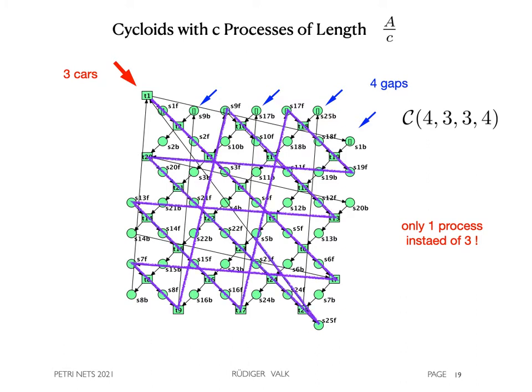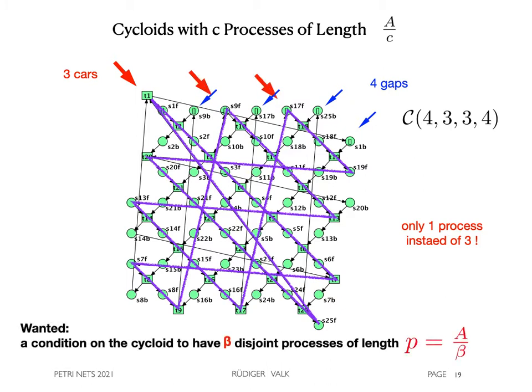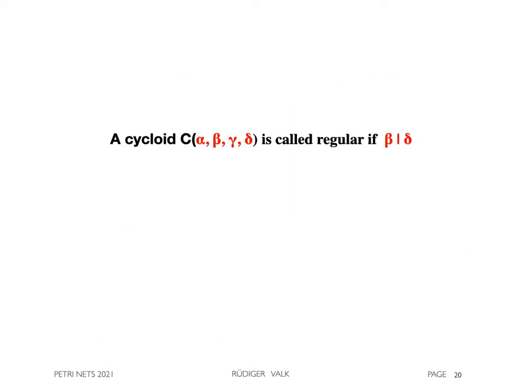What we want is a condition on the cycloid to have beta disjoint processes of length P equals capital A divided by beta, where A is the total number of transitions. A cycloid with this property is called regular, which holds if and only if beta divides delta.